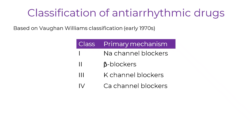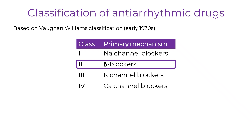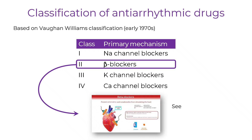In this lecture, we'll focus on the class 2 agents, the beta blockers. If you are looking for a broader overview of beta blockers and their effects on the heart, I've covered that in a separate video in the Heart Pharmacology playlist. Here, we will concentrate specifically on the anti-arrhythmic actions of beta blockers, how they work, when we use them, and why they are important in managing cardiac arrhythmias.